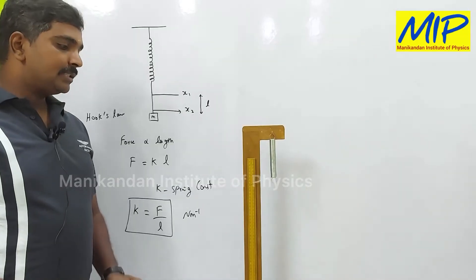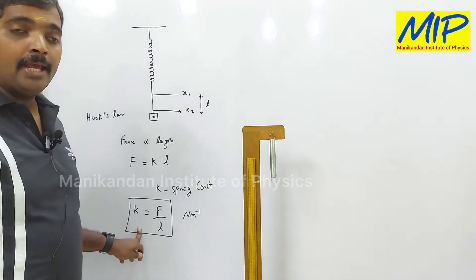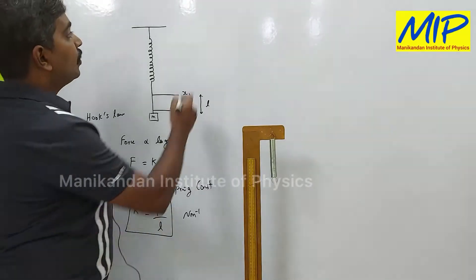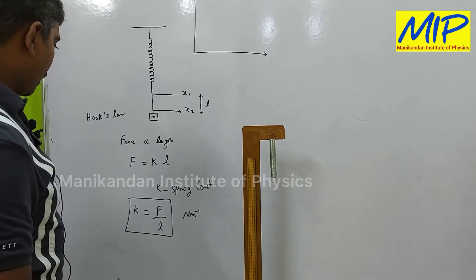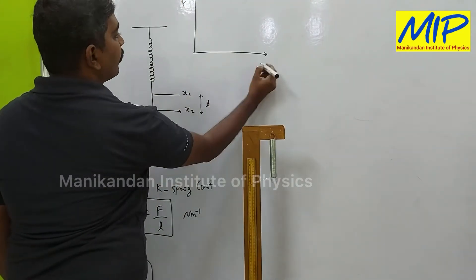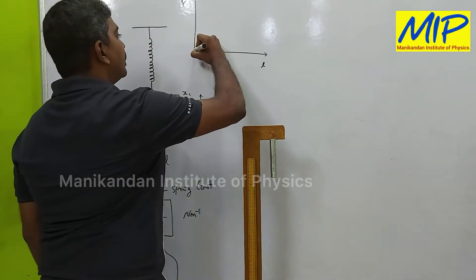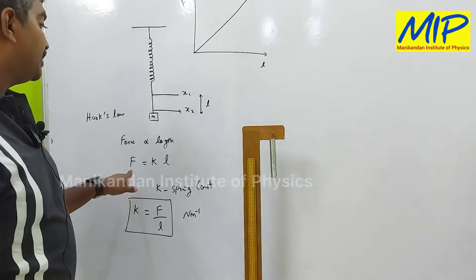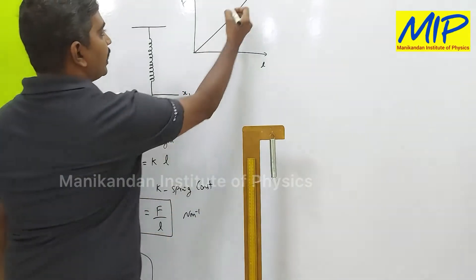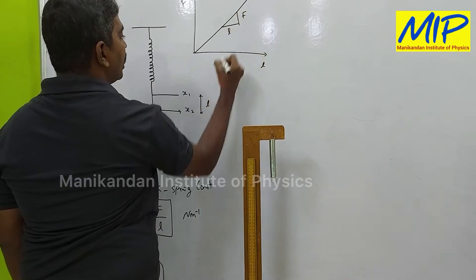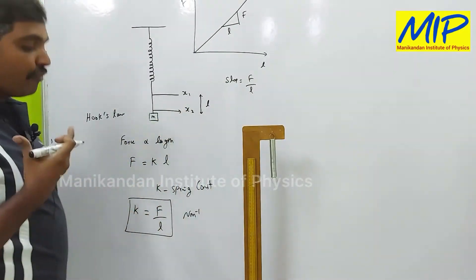In this experiment I am going to explain how to find the spring constant k using a graphical method. I am going to plot a graph between the applied force versus the extension. As force increases, the length also increases, giving a straight line — meaning force is directly proportional to length. If I take the slope of this curve I get f by l, and from that slope I am able to find the spring constant.